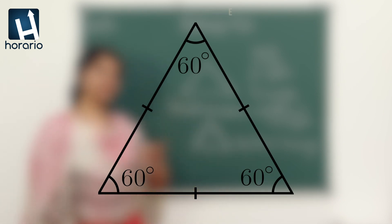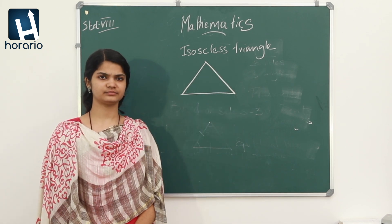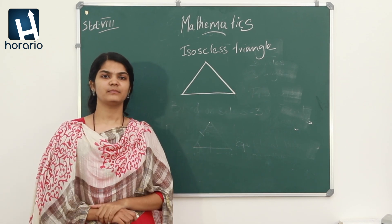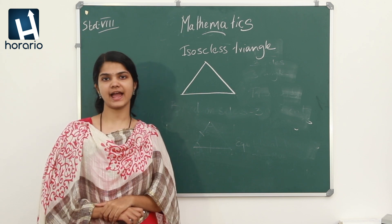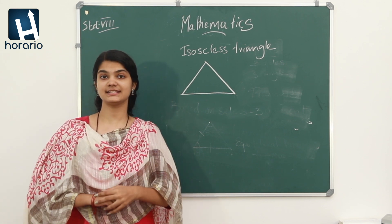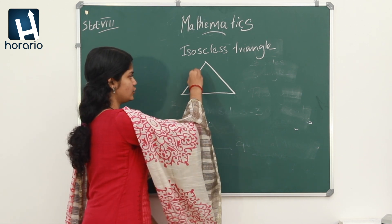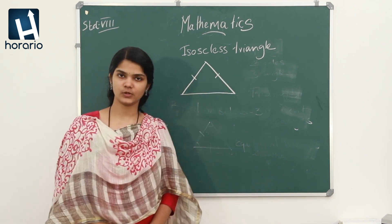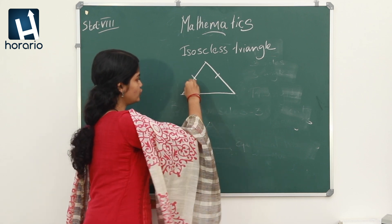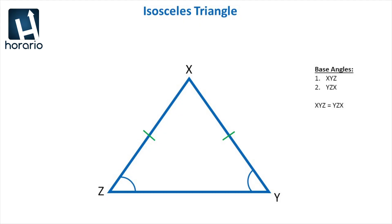Now let's move on to the next triangle, that is isosceles triangle. What is the peculiarity of an isosceles triangle? We have studied this in earlier classes. That is, two sides are equal and two angles are equal. Then we say that particular triangle is an isosceles triangle.